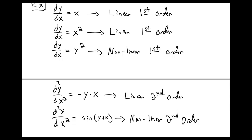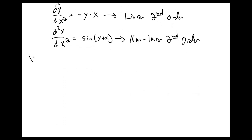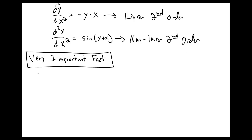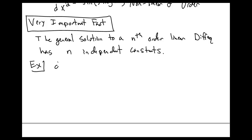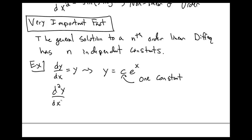Hopefully that gives you a sense of what linearity and the order of a differential equation are. A really important fact is that the general solution to an nth order linear differential equation has n independent constants. We're not going to prove that here — you can take a differential equations course and prove it — but we're just going to use this very important fact. As an example, dy/dx equal to y: the solution is y equal to ce^x, and this general solution only has one constant in it.